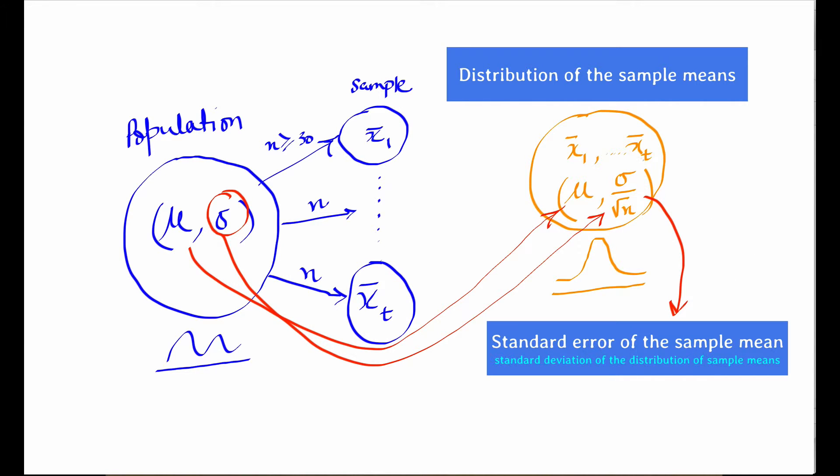Now how do we apply this? When we're given the standard deviation of the population, the standard error of the sample mean can be calculated. Now practically the population standard deviation is almost never known. So instead we estimate the standard error of the sample mean by dividing the standard deviation of the sample by the square root of n.